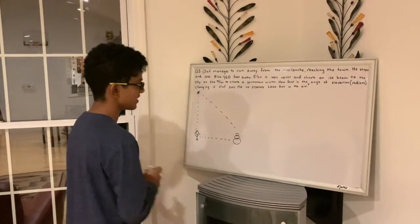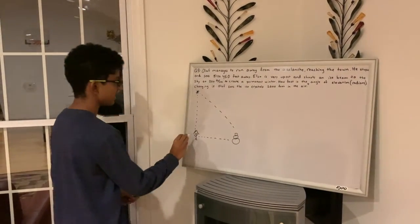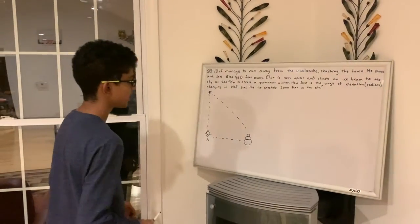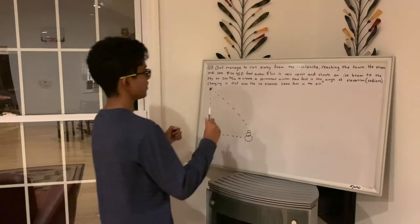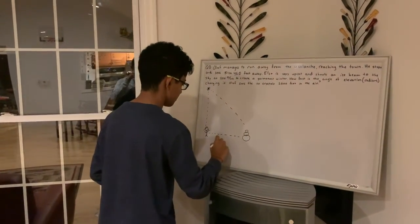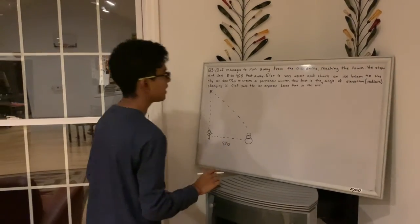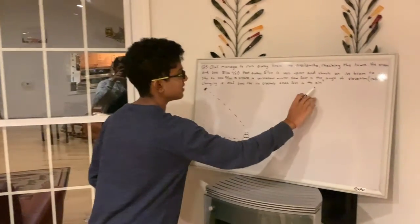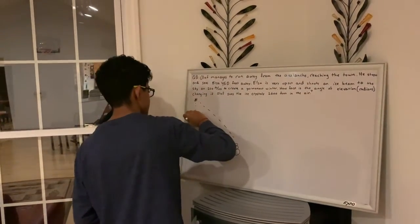So here we've made a diagram. This is Olaf, that is Elsa, and this is the ice beam, ice crystals, whatever you want to call it, in the air. So let's fill in what we know. He stops and sees Elsa 450 feet away, so we know this is 450. And we know the ice beam is up in the sky 2000 feet, 2000 feet in the air. So this will be 2000.